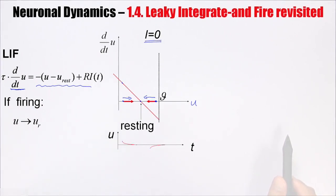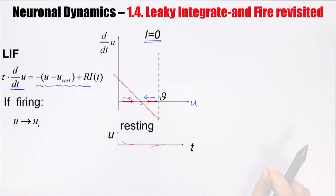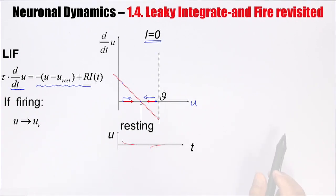For the Leaky Integrate-and-Fire model, we have already analyzed the properties of the neuron mathematically — we found the fixed point and the resting potential as the stationary solution in the absence of input. What I am doing here is a graphical solution. This is of course overkill for a linear differential equation, because for a linear equation we can write down the solution. However, it will allow us to go from the Leaky Integrate-and-Fire model to non-linear integrate-and-fire models.